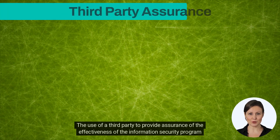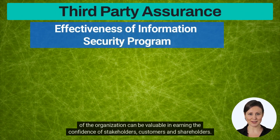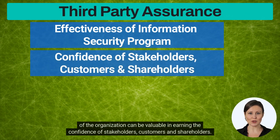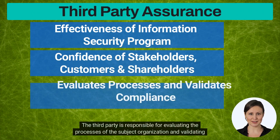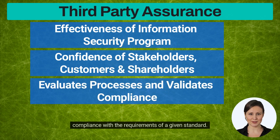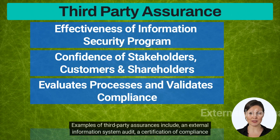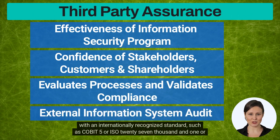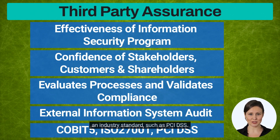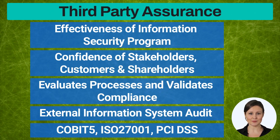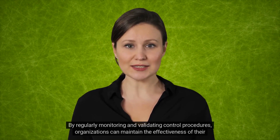The use of a third party to provide assurance of the effectiveness of the information security program can be valuable in earning the confidence of stakeholders, customers, and shareholders. The third party is responsible for evaluating the processes of the subject organization and validating compliance with the requirements of a given standard. Examples of third-party assurances include an external information system audit, a certification of compliance with an internationally recognized standard such as COBIT 5 or ISO 27001, or an industry standard such as PCI DSS.